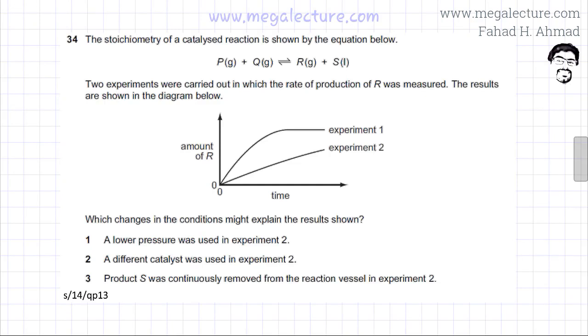The following question is taken from a past paper. The question states that you have the stoichiometry of a catalyzed reaction shown by the equation below. So there's a reaction given where P, which is a gas, and Q is also a gas, are reacting to produce R, which is a gas, and S, which is in liquid state, and there's a reversible reaction happening.